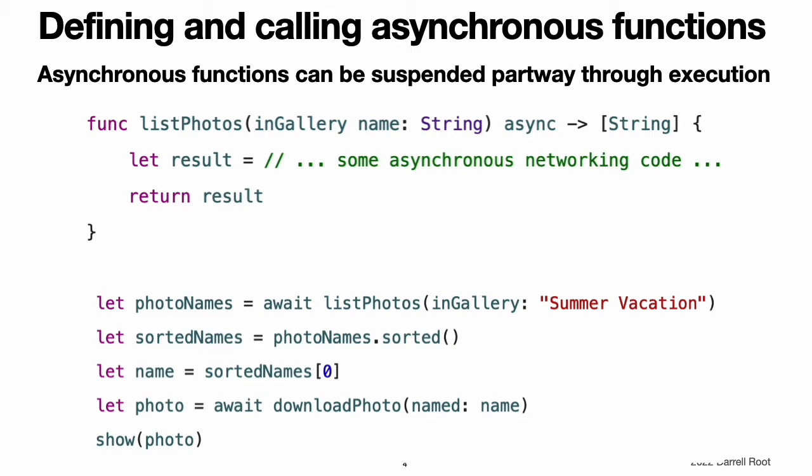If the function or method returns a value, you write async before the return arrow. For example, here is how you might fetch the names of photos in a gallery. For a function or method that is both asynchronous and throwing, you write async before throws. When calling an asynchronous method, execution suspends until that method returns. You write await in front of the call to mark the possible suspension point. Inside an asynchronous method, the flow of execution is suspended only when you call another asynchronous method. Suspension is never implicit or preemptive, which means every possible suspension point is marked with await.